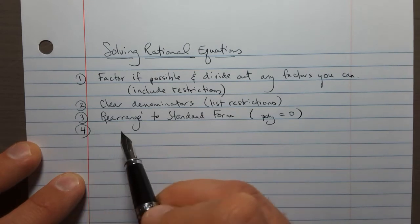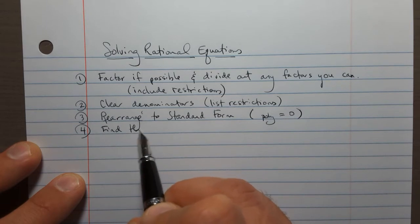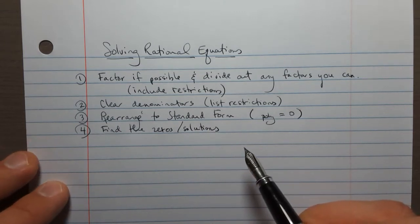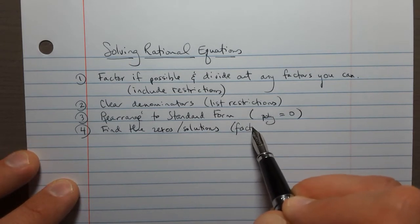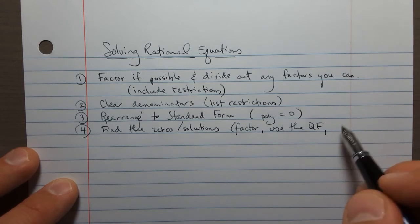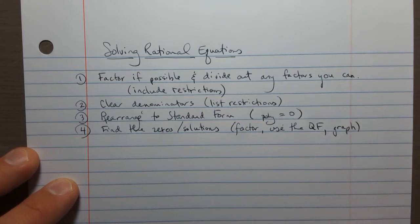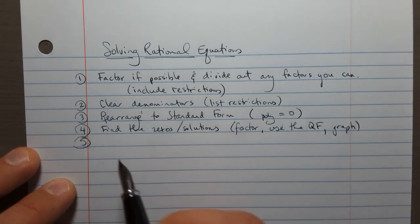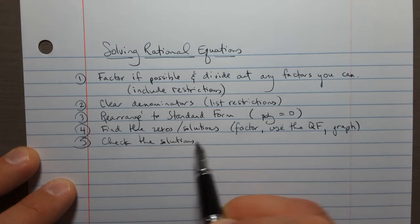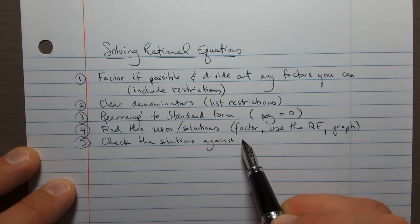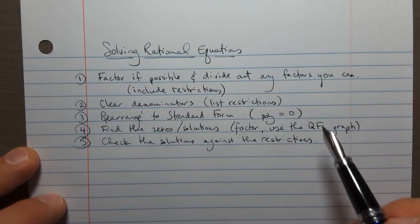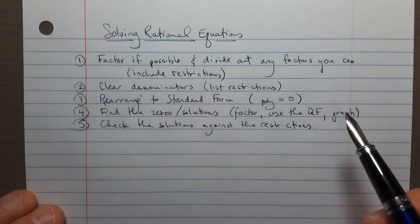And then last, or not last, second last, you're going to find the zeros or the solutions in the usual way, either by factoring, for example, you could factor, you could use the quadratic formula if it's a degree 2 polynomial. You might even just graph it and look at the solutions there. And the last step, this is really important, is that you need to check the solutions against the restrictions, because some of those solutions might be what we call extraneous, where they are part of the restriction list and so they can't be used as solutions to the equation.